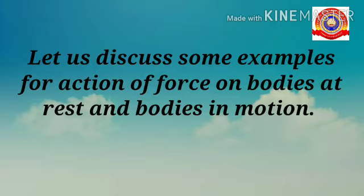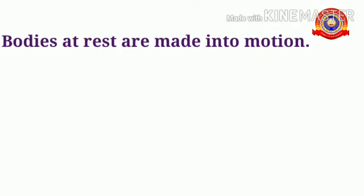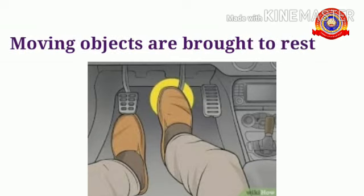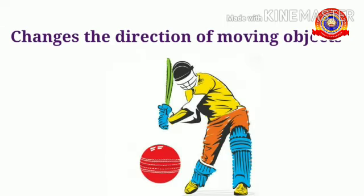Let us discuss some examples for the action of force on bodies at rest and bodies in motion. The first one: bodies at rest are made into motion — for example, an arrow is sent from the drawn bow. The next one: moving objects are brought to rest — example, vehicles are stopped by applying brakes. The next one: changes the direction of a moving object — for example, a fast moving cricket ball is hit by the batsman with the bat.